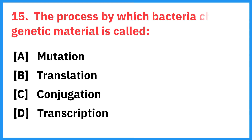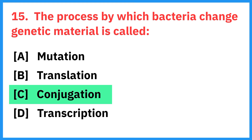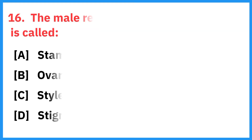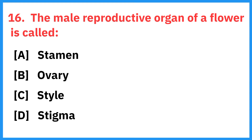The process by which bacteria exchange genetic material is called? Right answer is conjugation. The male reproductive organ of a flower is called? Correct answer is ovary.